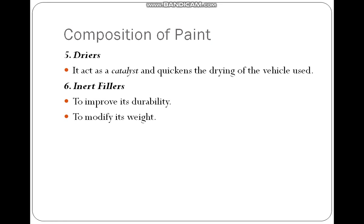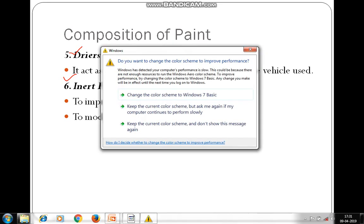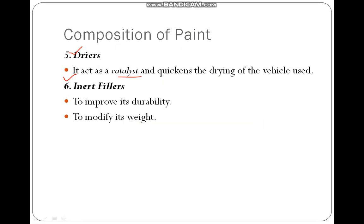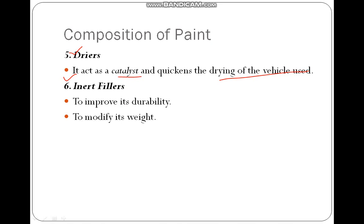Some other compositions are dryer and inert filler. Dryer acts as a catalyst and quickens the drying of the vehicle used. Inert filler is used to improve durability and to modify the weight of the paint.